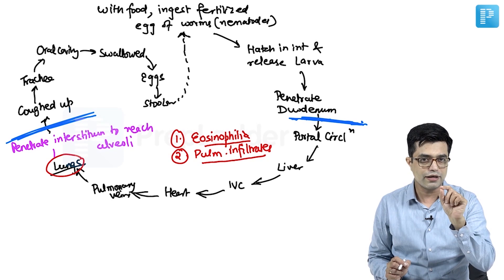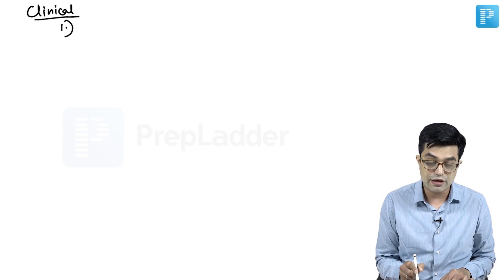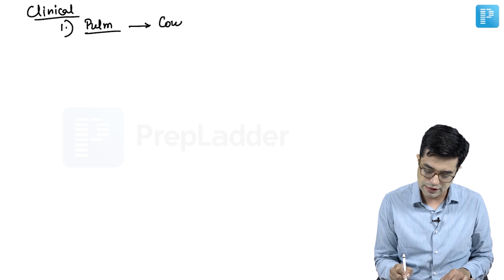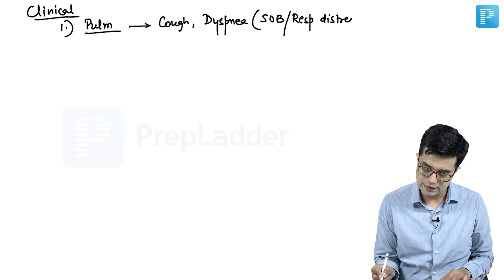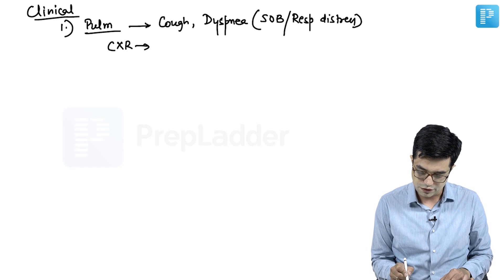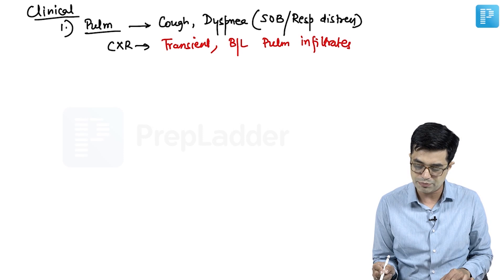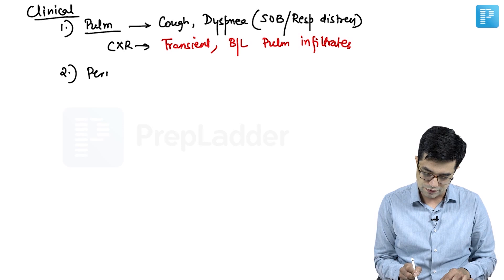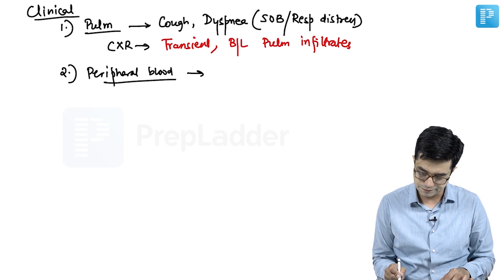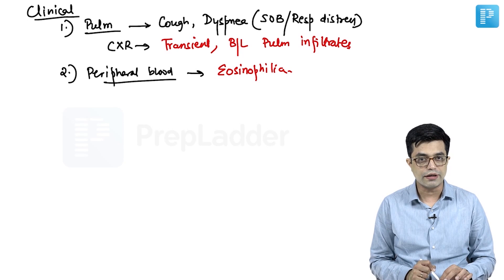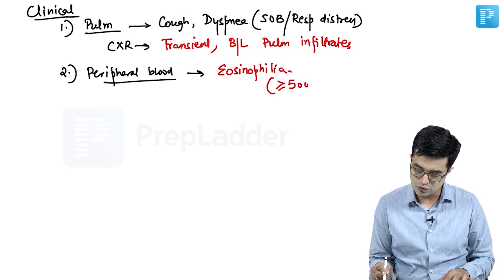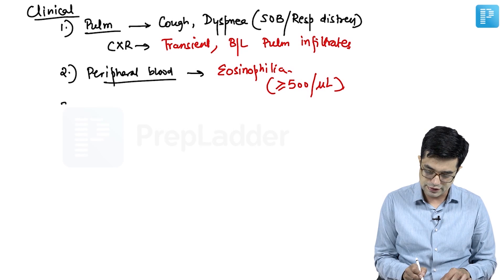Eosinophilia with transient pulmonary infiltrates is the usual presentation. Clinical findings include pulmonary symptoms in the form of cough and dyspnea; younger children will have shortness of breath or respiratory distress. Chest X-ray shows transient bilateral pulmonary infiltrates — fluffy infiltrates present on the peripheries bilaterally. Peripheral blood shows eosinophilia; the total number of eosinophils is usually equal to or more than 500 per microliter.